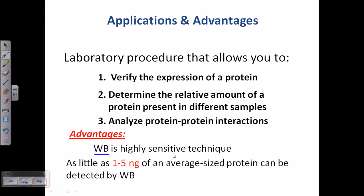The advantages of western blotting — designated as WB — include that it is a highly sensitive technique. We can detect proteins using SDS-PAGE (sodium dodecyl sulfate polyacrylamide gel electrophoresis), which separates proteins by mass by making all their charges negative. With silver staining we can detect approximately 10 nanograms of protein, but using western blot analysis we can detect as low as 1 to 5 nanograms.